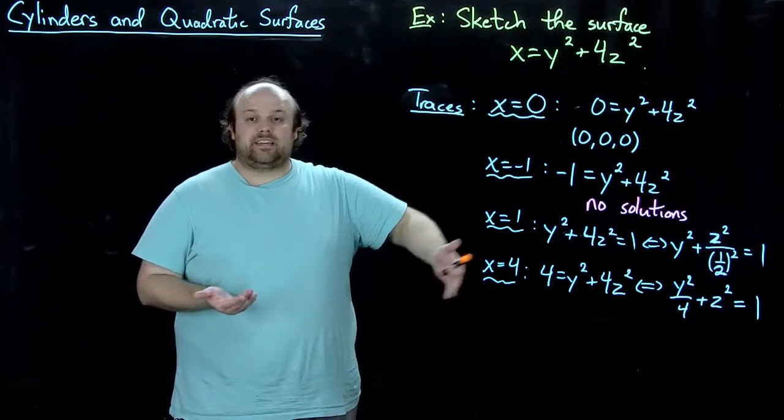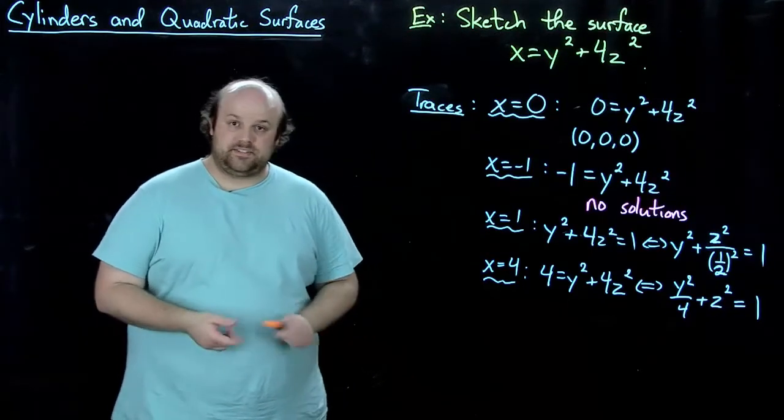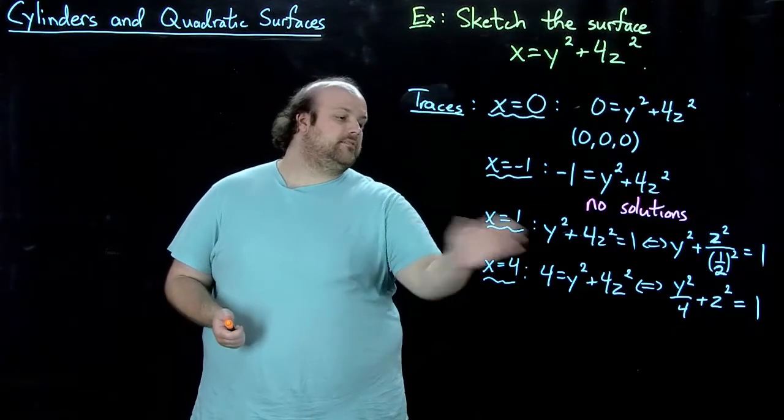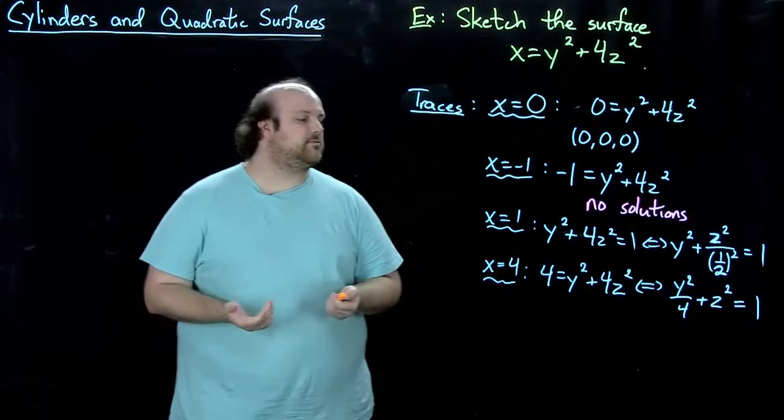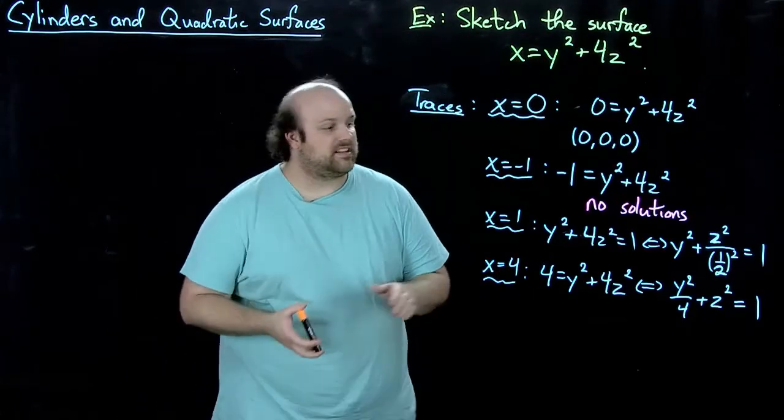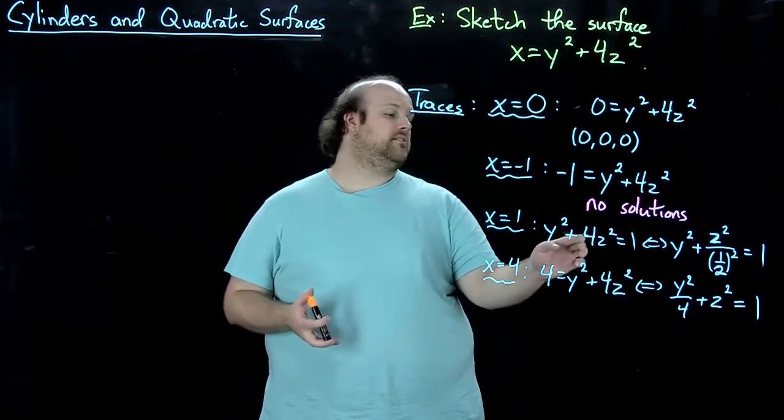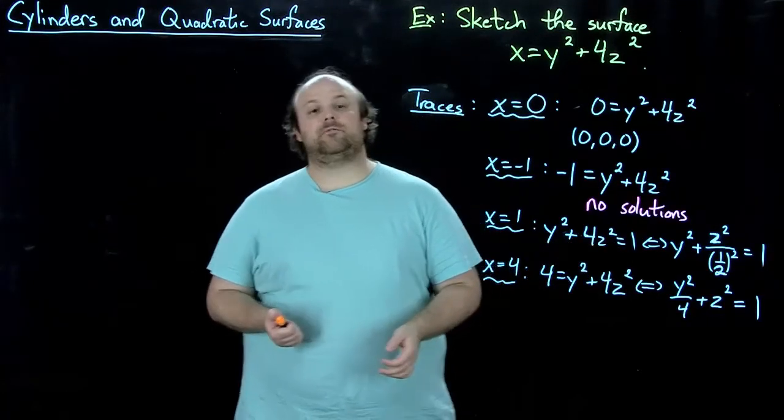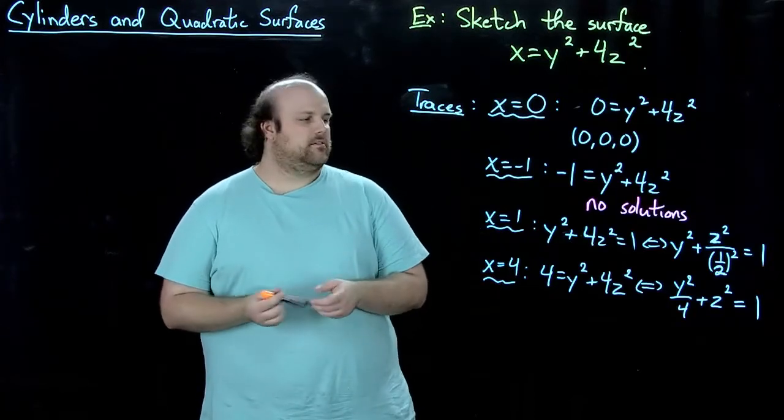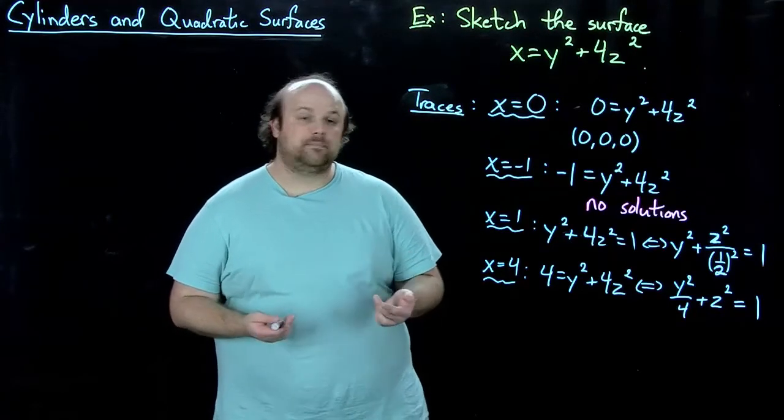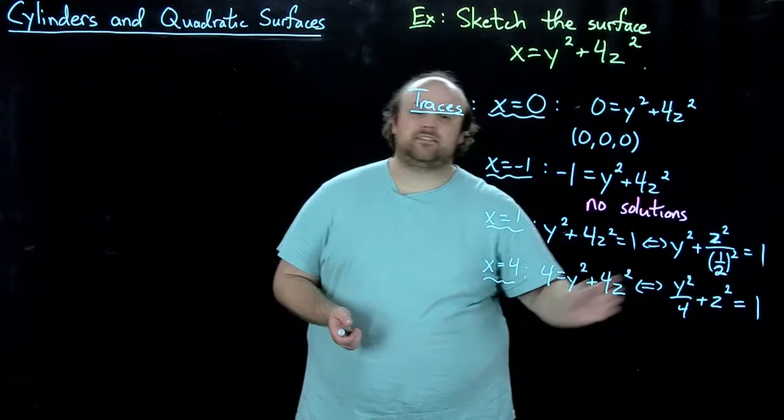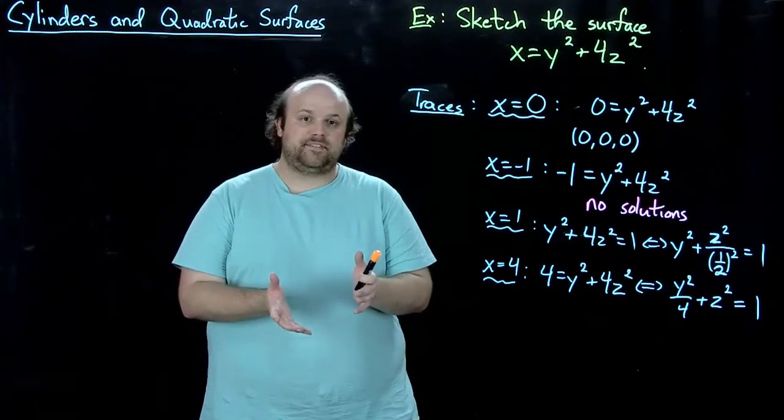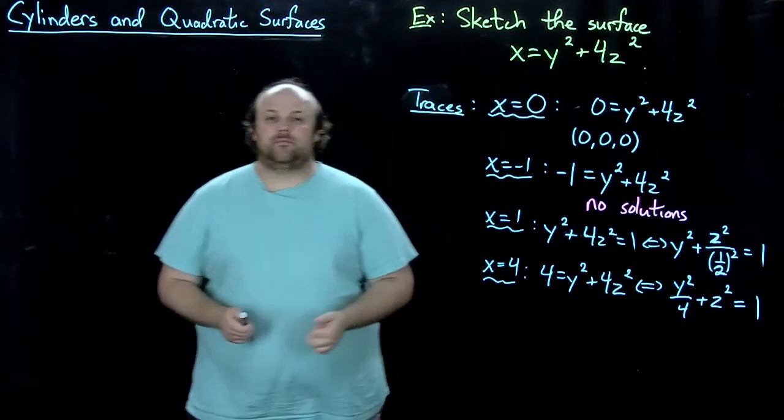So now we know we just need to keep taking different x values. So let's start with, say, x equals one. Well, so when x equals one, we plug that in, and, I know this order is a little backwards here, but, y squared plus 4z squared equals one, and, well, what that is is that's an ellipse. And, in particular, it's this one, y squared plus z squared over one-half squared equals one.